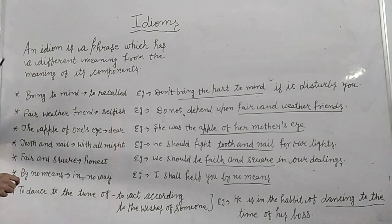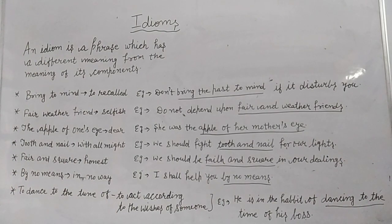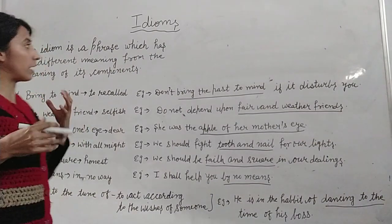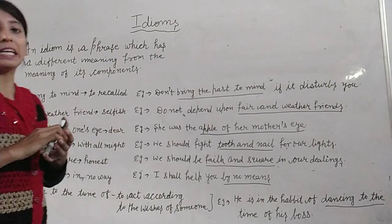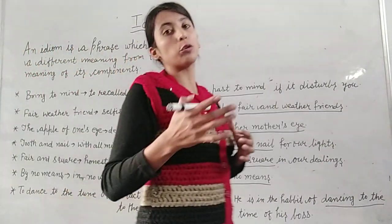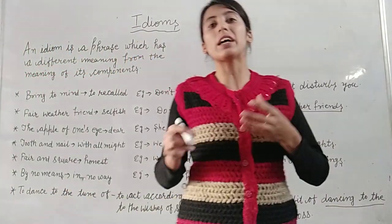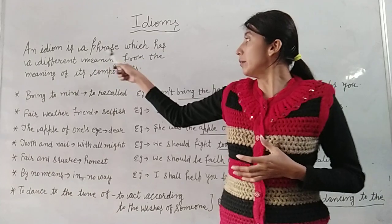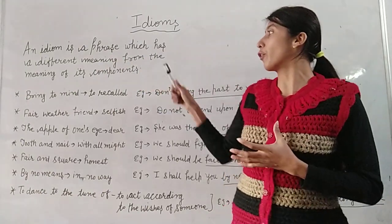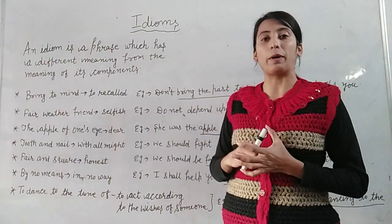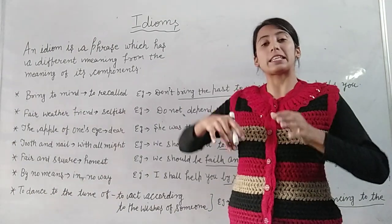Definition: An idiom is the phrase which has a different meaning from the meaning of its components. An idiom is a phrase which has a different meaning from the meaning of its components.